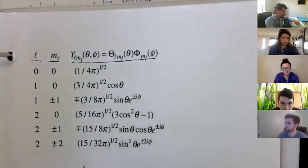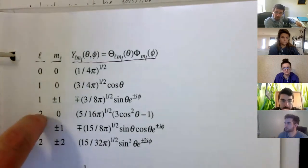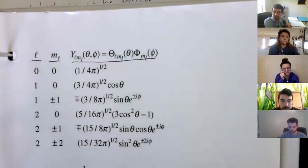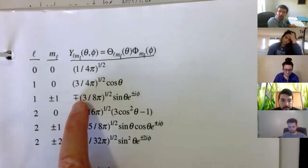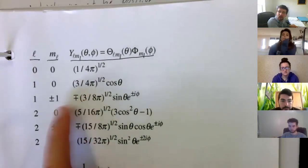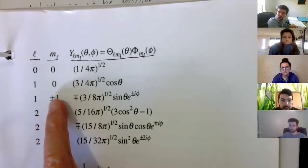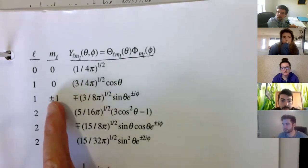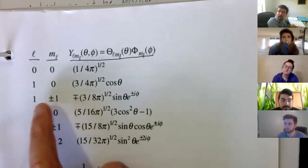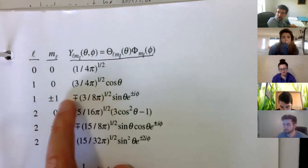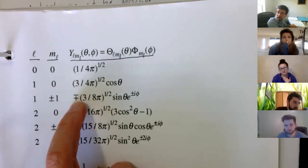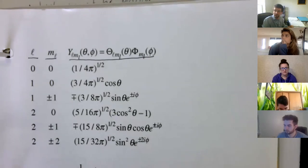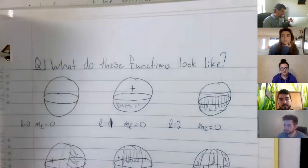What you need to know is how to utilize these. You don't have to memorize them, but you need to know: given an L value of, say, two and M_L of negative one, this is the resulting function. Notice there's a negative on top and positive on bottom—if you had M_L of plus one you'd have negative three-eighths pi, and for negative one, positive three-eighths pi. The sign direction matters. We'll use these functions several times throughout the semester.